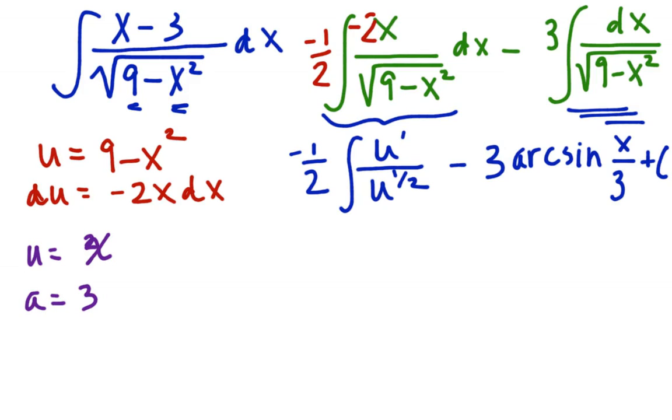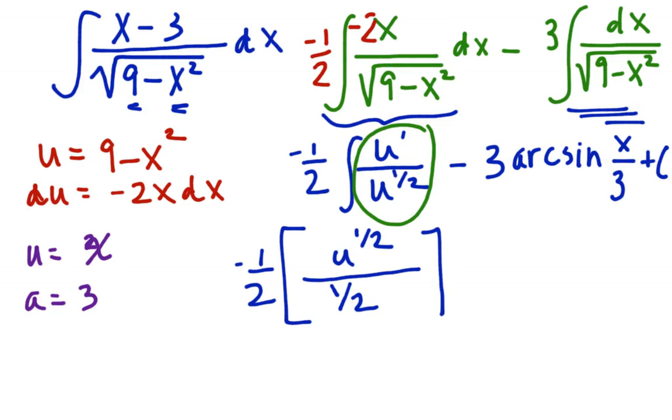This right here is really u to the negative 1 half. And when I do reverse power rule, u to the negative 1 half, what do I get? I've got this 1, negative 1 half here. u to the negative 1 half, so it's going to be u add 1. So I have u to the 1 half all over 1 half. And this just stays the same on the right. And so let's do this last substitution. This is going to cancel out this 1 half and this 1 half to be just negative. And what did we say u was? Negative square root 9 minus x squared minus 3 arc sine x over 3 plus c.